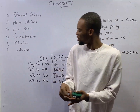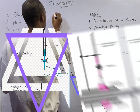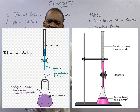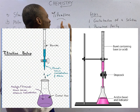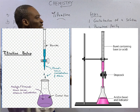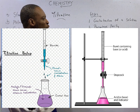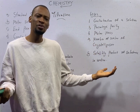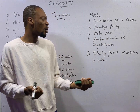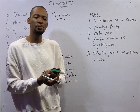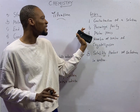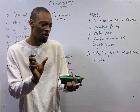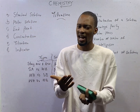In a laboratory, we use titration to carry out acid-base reactions or neutralization. In titration, you may be asked to calculate the concentration of a solution, percentage purity, molar mass, or percentage water of crystallization, and solubility products of a substance. All these can be determined via titration.